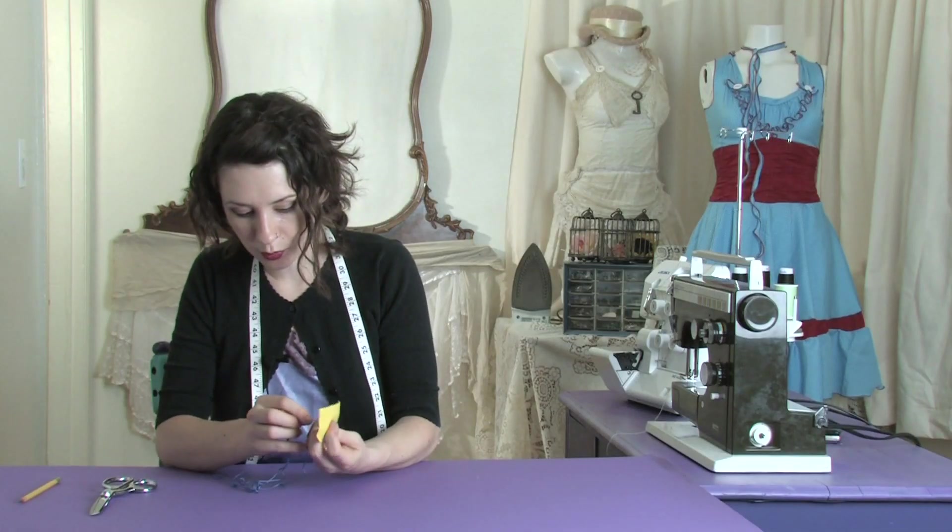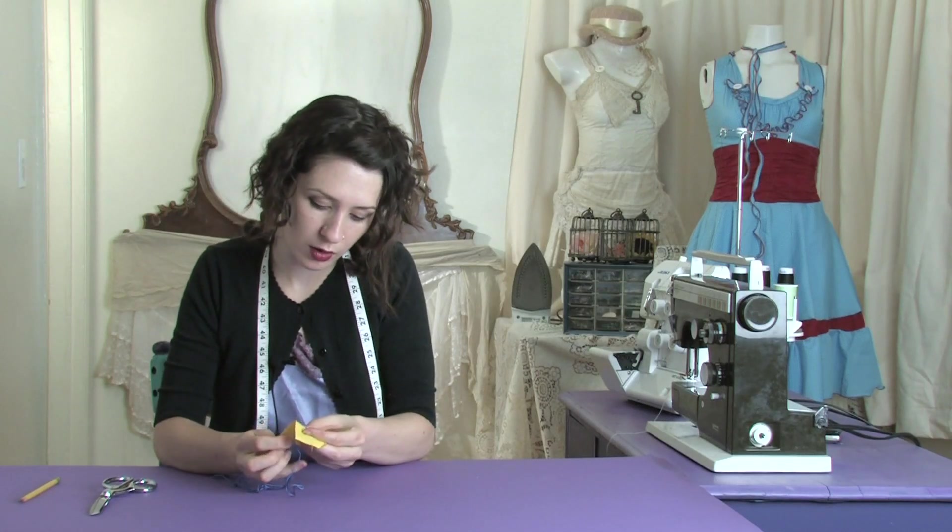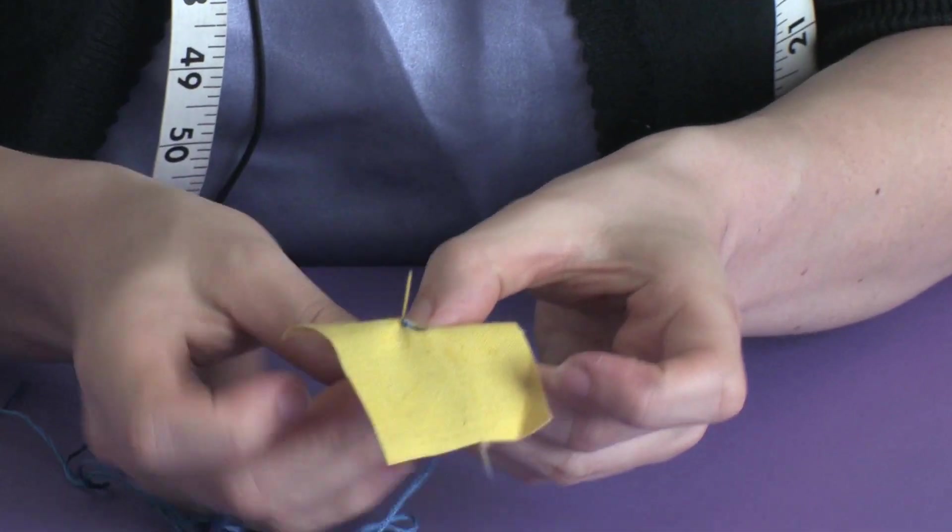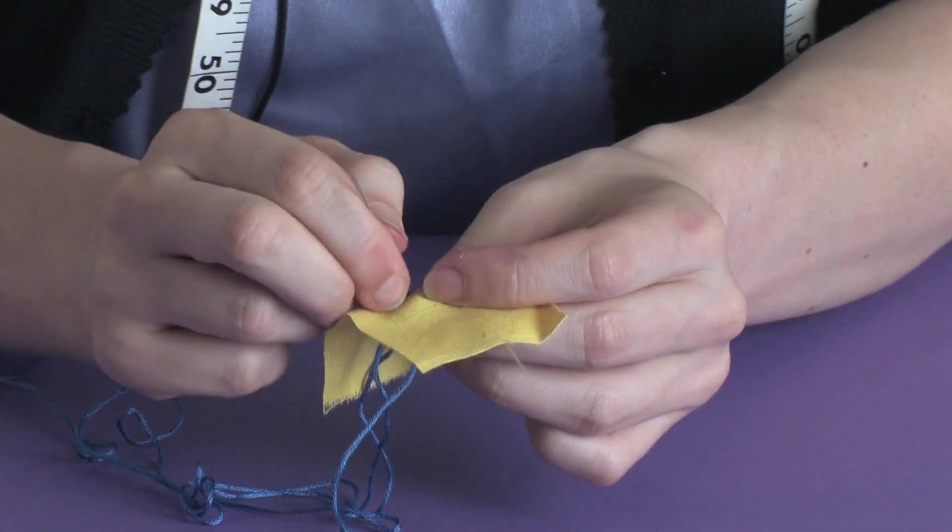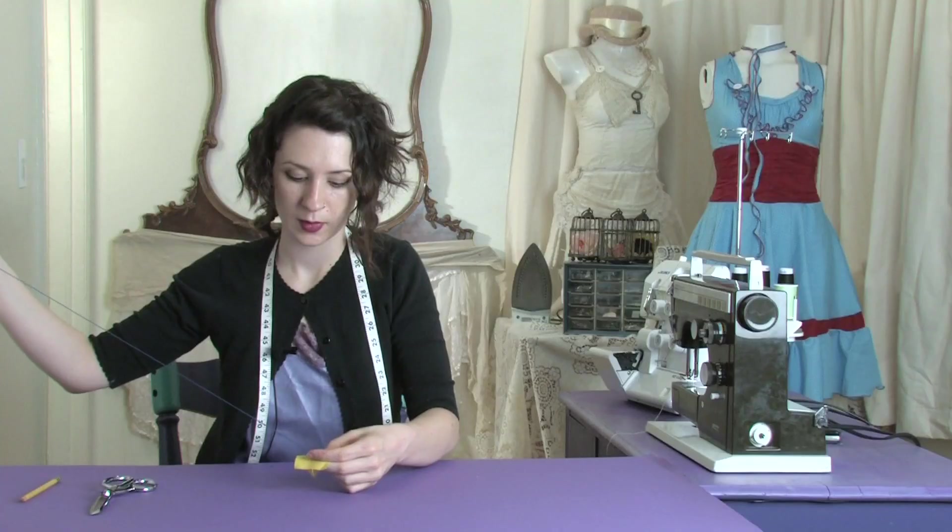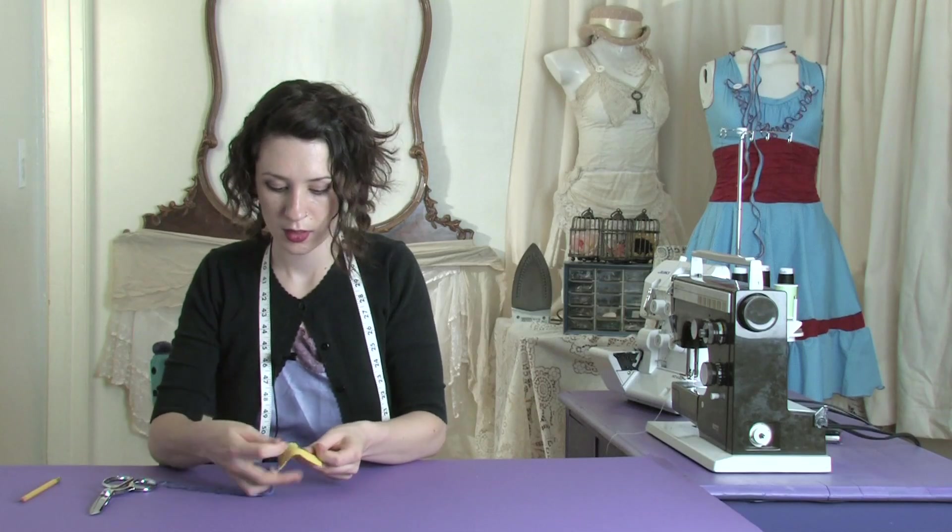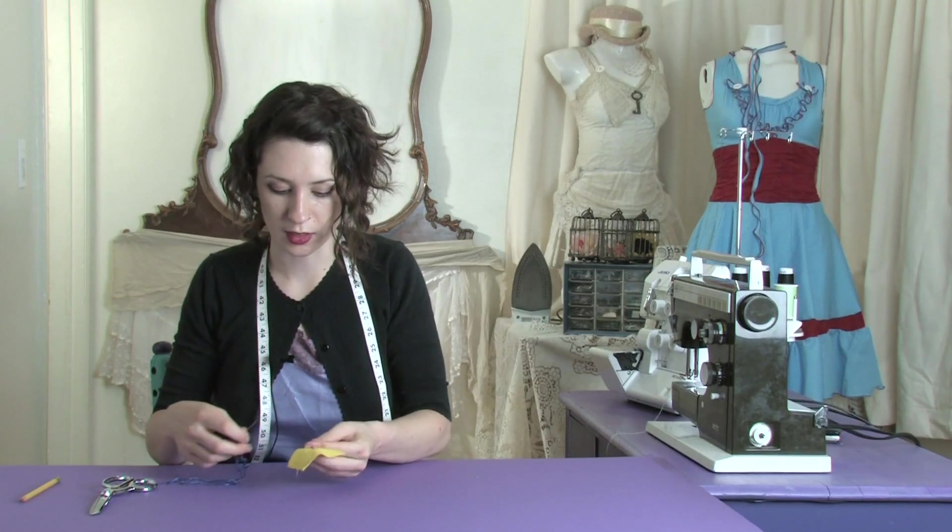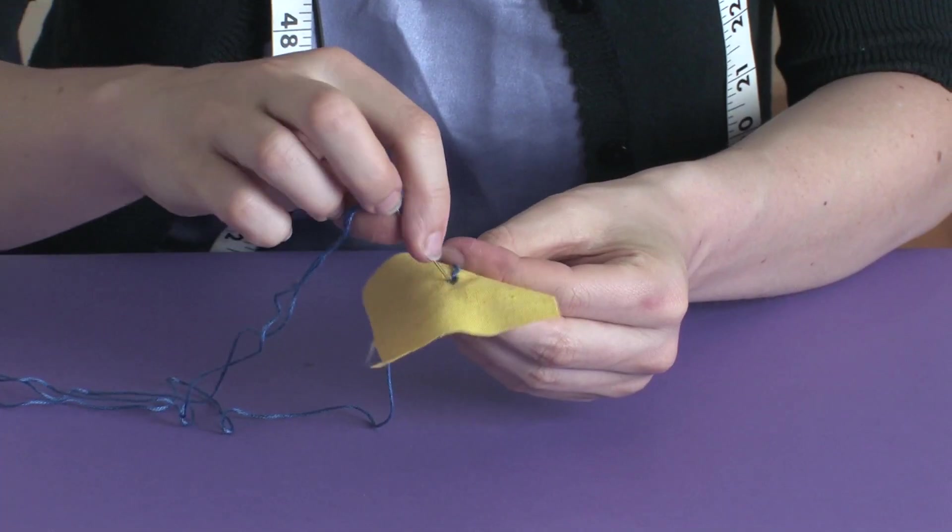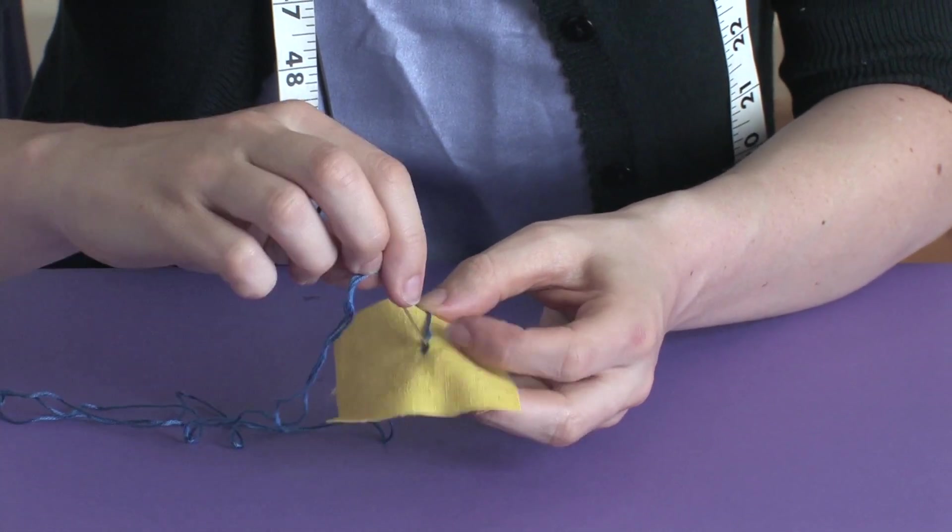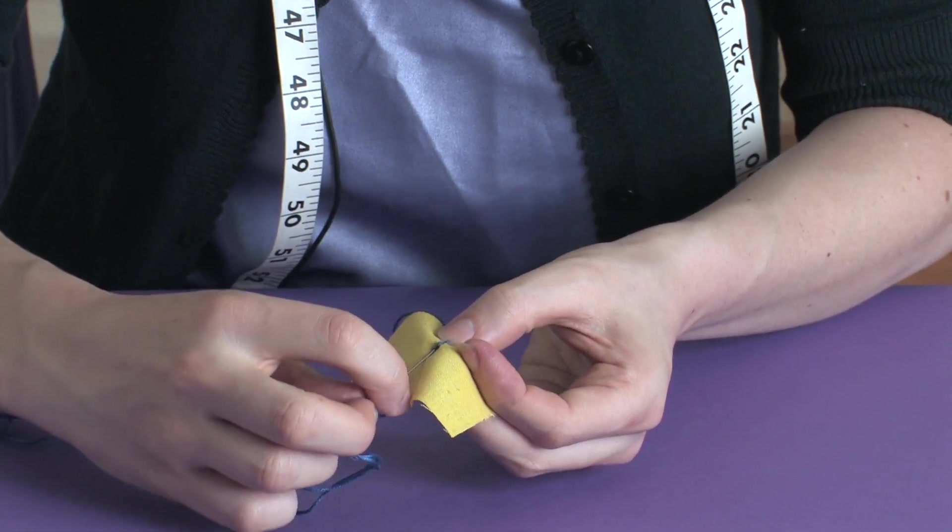Take your needle and put it back through right about where that other stitch came out. Now take the thread there and hold it in place and then go down through the hole and back up right next to that first stitch.